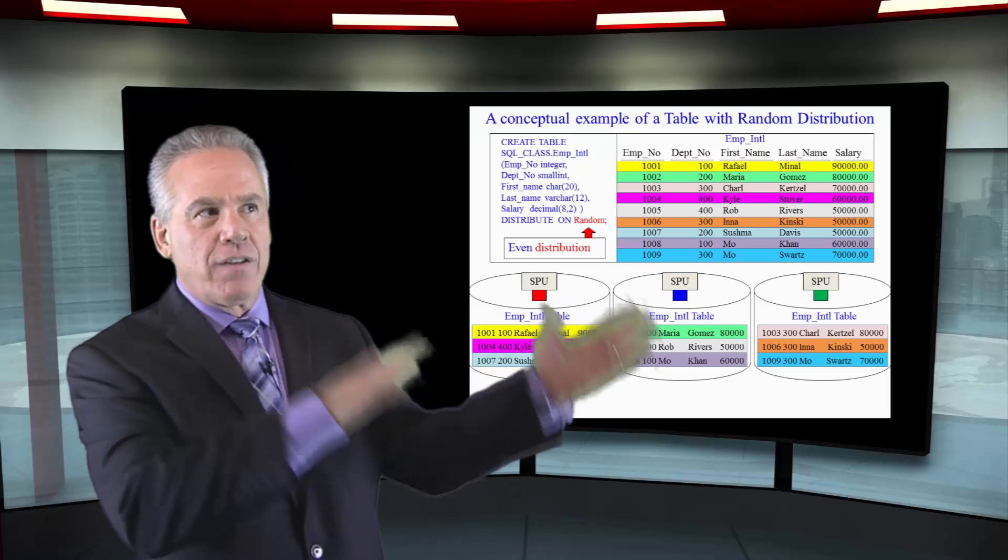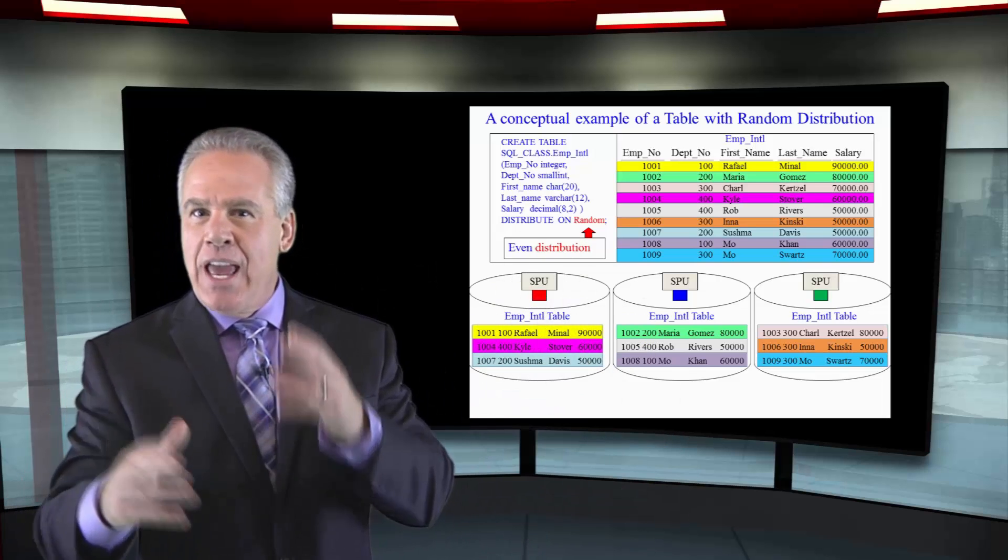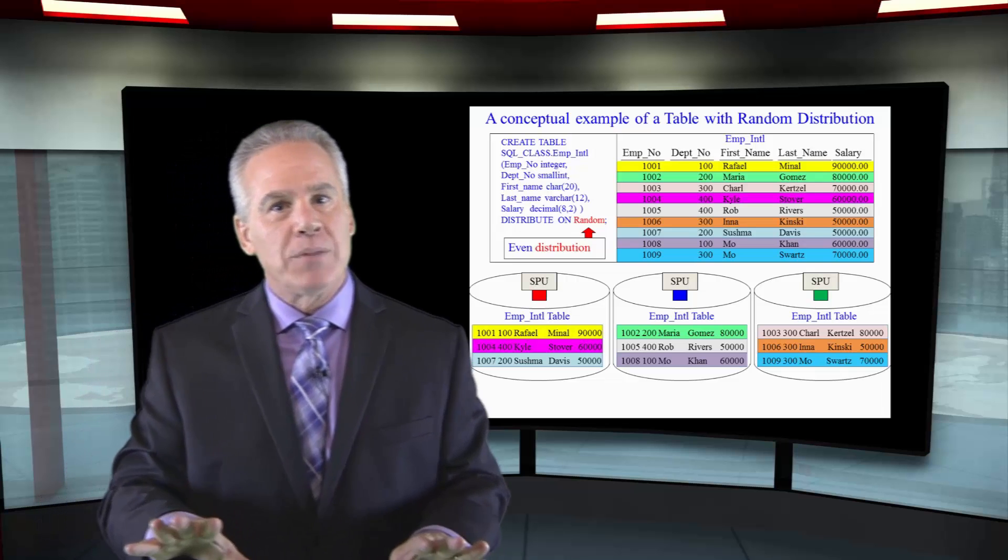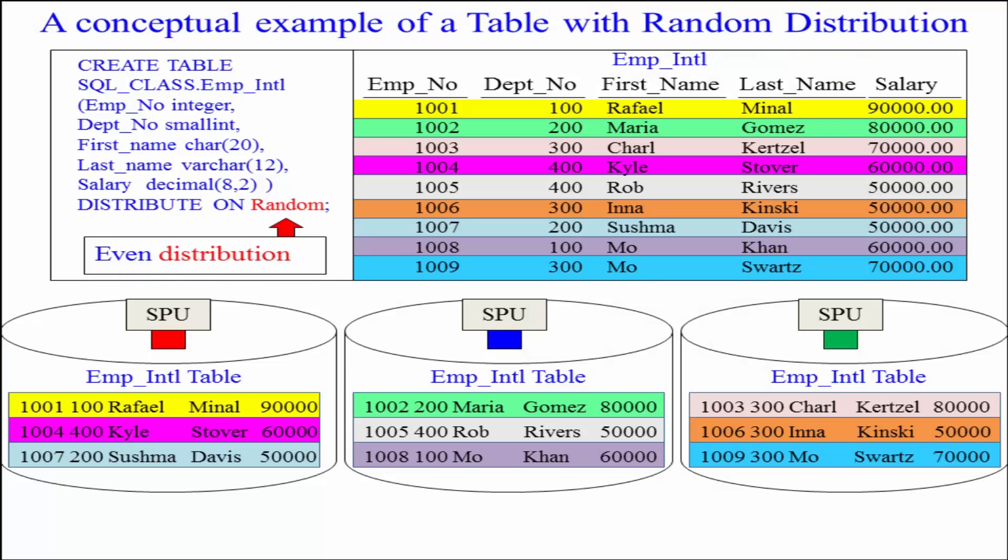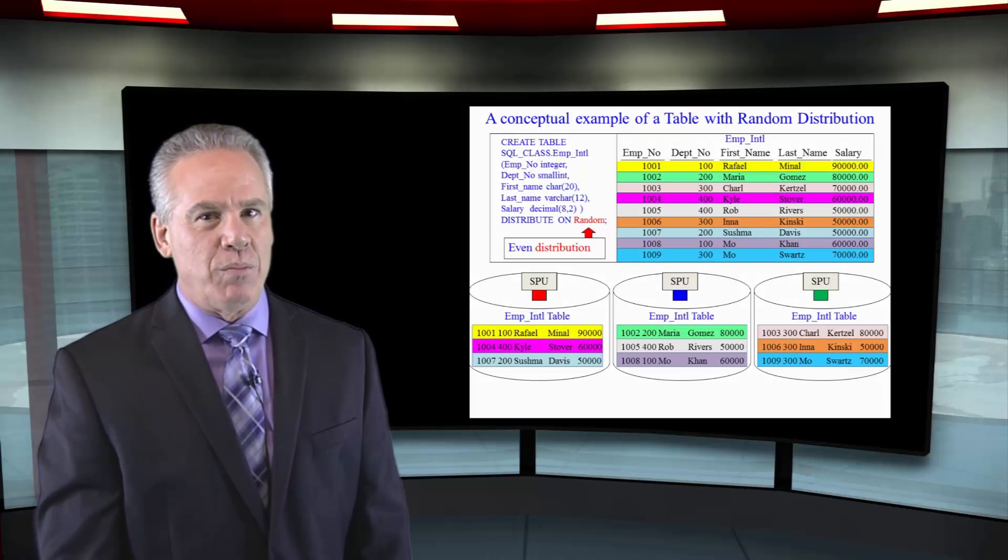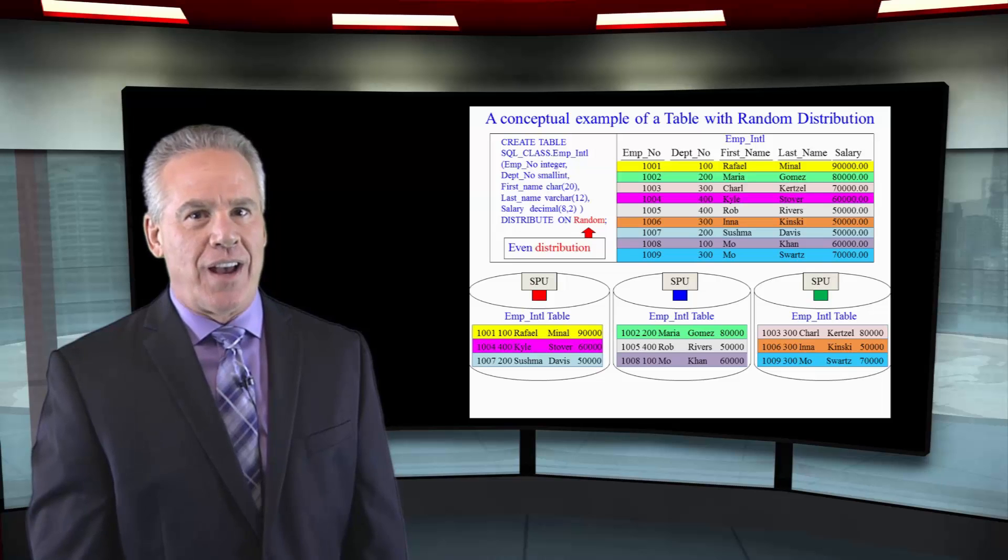Sometimes when they're moving data from Oracle to Netezza and they don't know how it's going to be queried on the data warehouse, they'll start off sometimes with everything distributed by random and then as they see the queries coming in from those users, they'll actually begin to pick a better distribution key. But the distribute on random for even distribution, it's a real clever design.